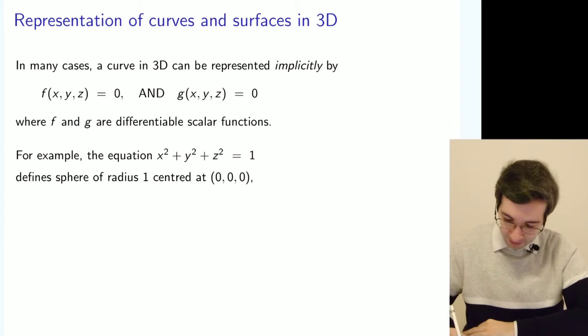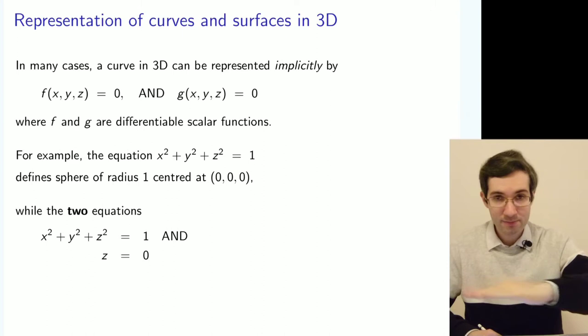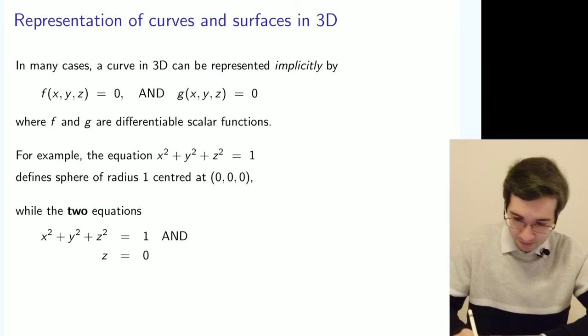A common example would be a sphere located at the center of radius 1, and if you take a sphere and also a plane then the intersection will give you a curve.